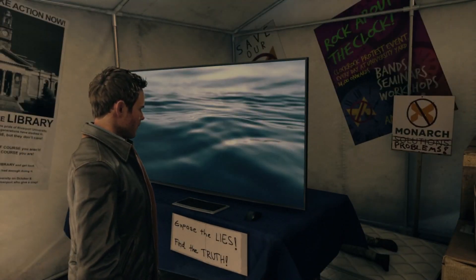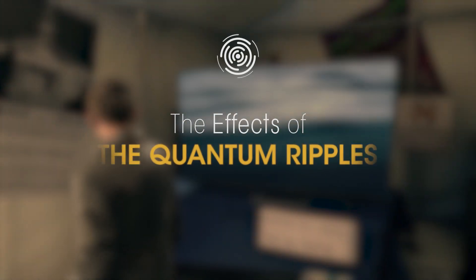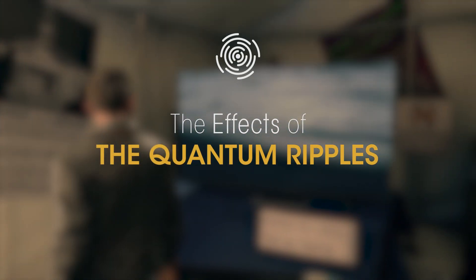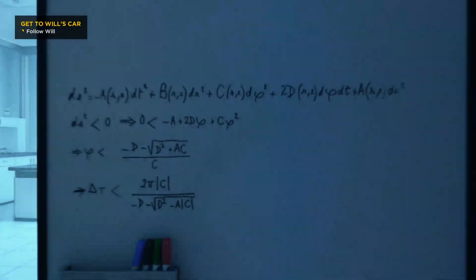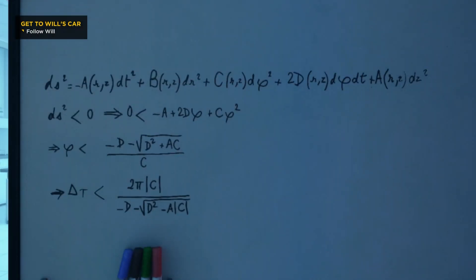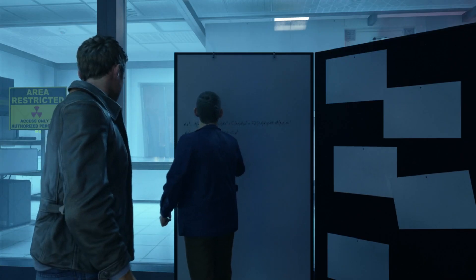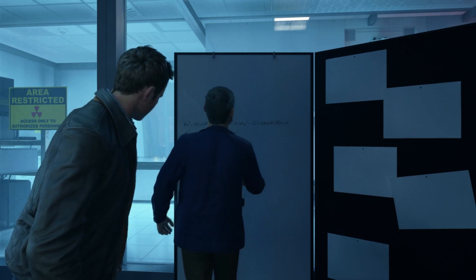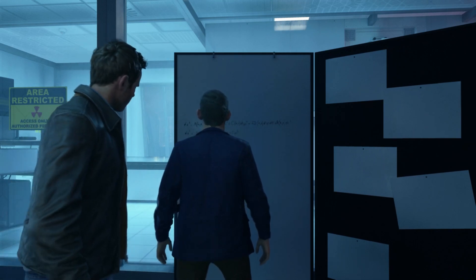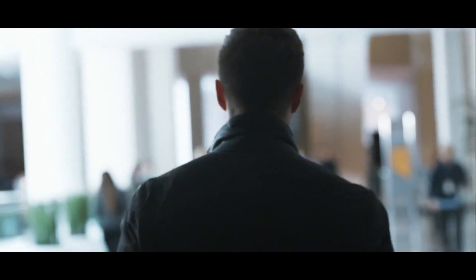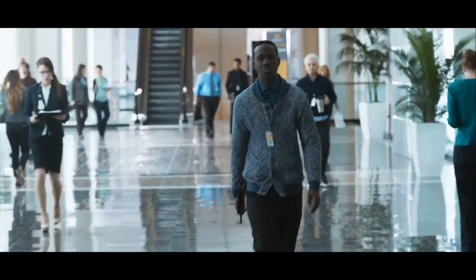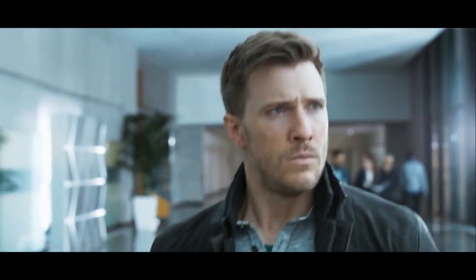One of those things are the effects of the quantum ripples. Anyone who has played the game has likely come across these at some point. Locating the whiteboard in the Riverport lab and letting Will correct the equation pops up a notification on screen that a quantum ripple occurred. Later, during the first episode of the show, some techs at Monarch mentioned that the equation was solved.